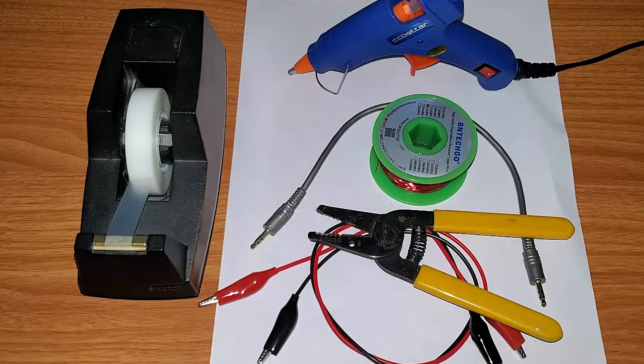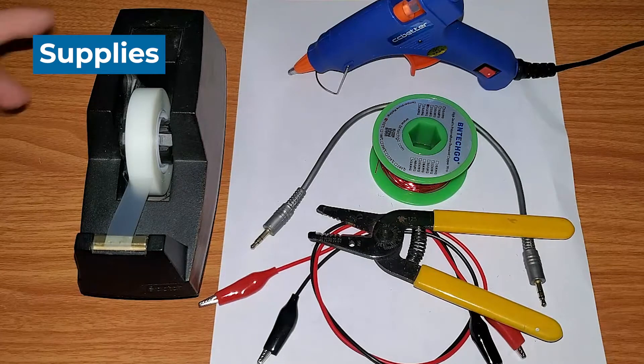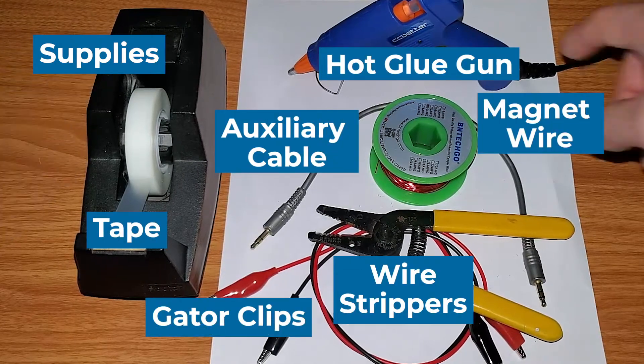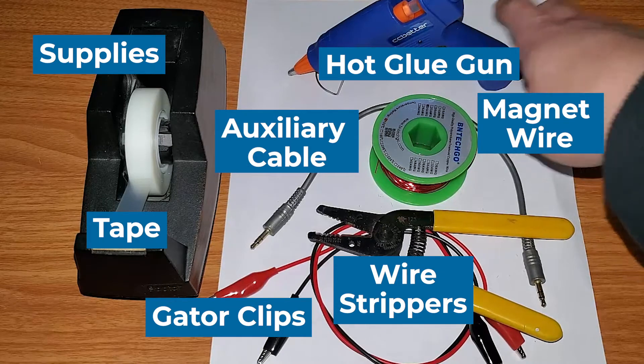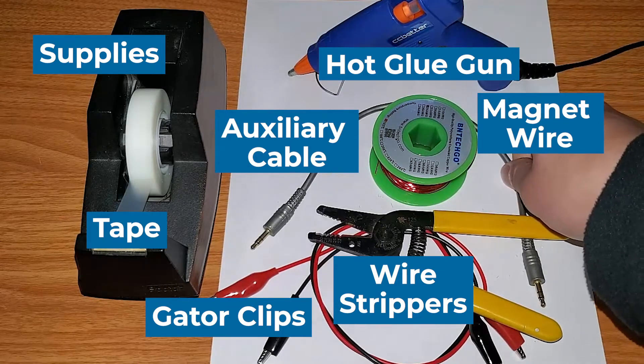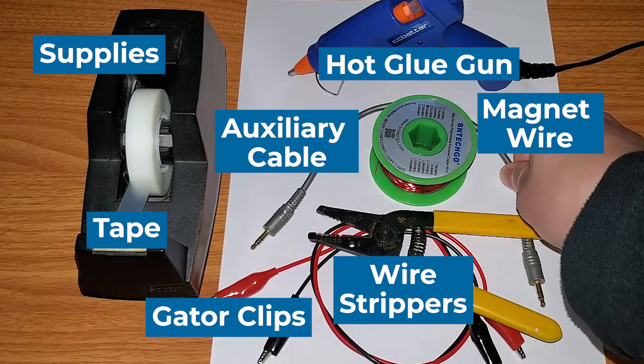In order to build our homemade paper plate speaker, we're going to need a few things. The first of which is some Scotch tape. I also have here a hot glue gun. If you do not have a hot glue gun, you may also just use super glue. I have an auxiliary cable here. This is the same type of cable that you would use to connect your phone to your car.